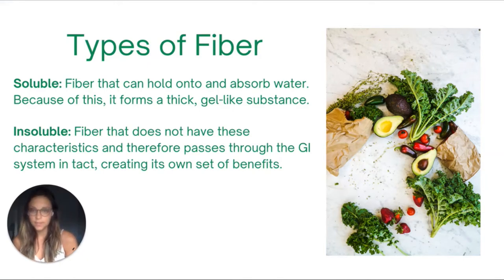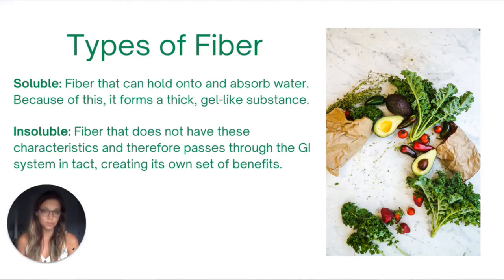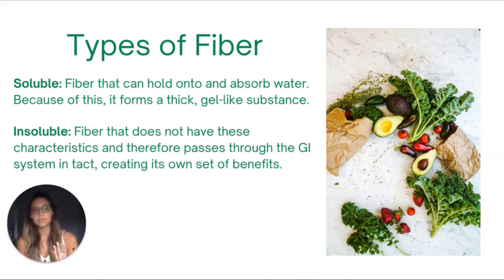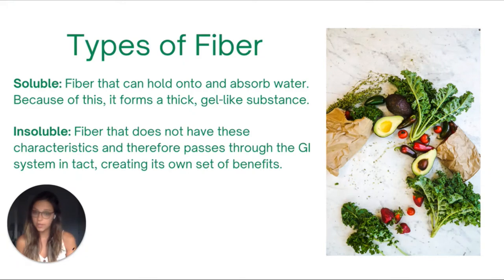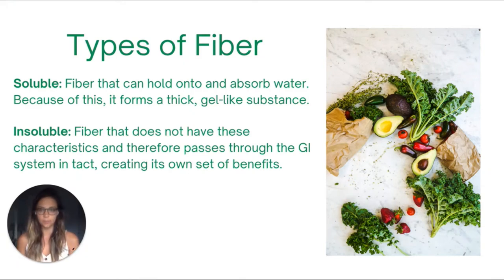The second type is insoluble fiber. Insoluble fiber does not have these characteristics — it can't absorb water, so after we eat it, it just passes through our GI system intact. But this is good; it has its own set of benefits, like helping to ease and prevent constipation, so it's really great for colon health.